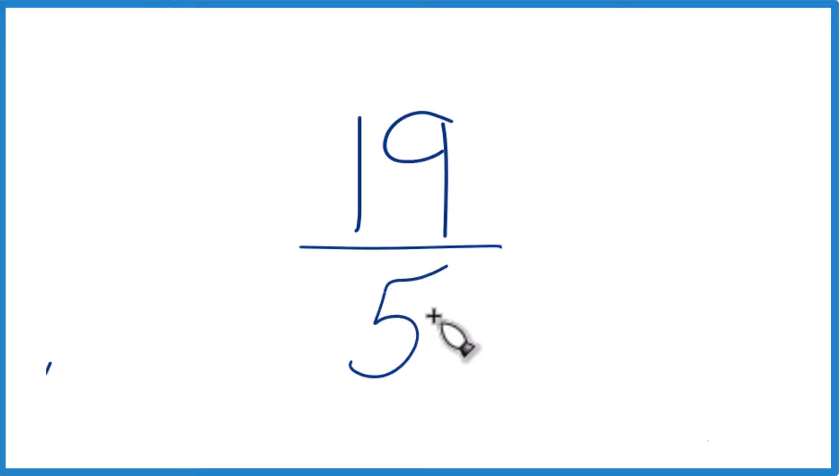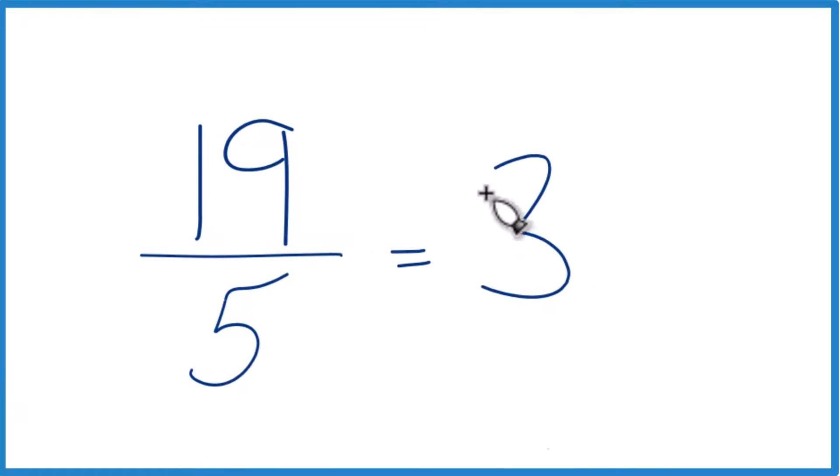The way we do that is 5 goes into 19. So 5 times 3, that's 15. So let's go with 3 as our whole number.